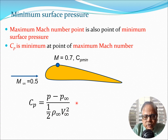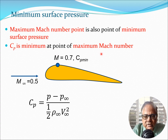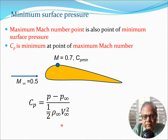The point of maximum Mach number on the airfoil is also the point of minimum surface pressure — the pressure is most negative there. So at this particular point, CP_min takes place, which also corresponds to the point of maximum velocity. CP is minimum at the point of maximum Mach number because CP is directly proportional to P; it is simply a non-dimensional way of measuring pressure at a given point, normalized with free stream values.